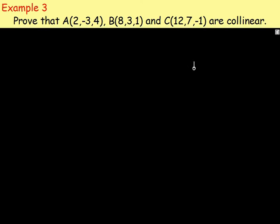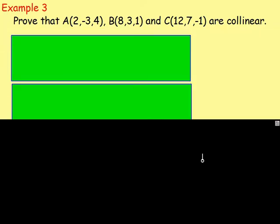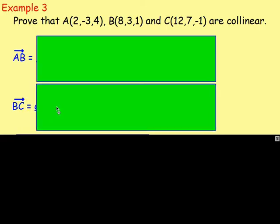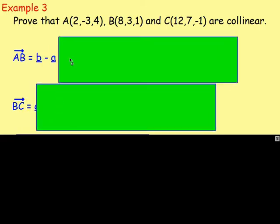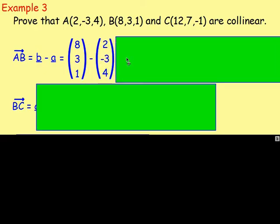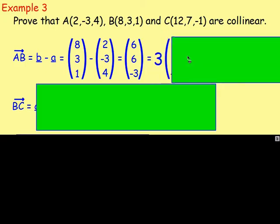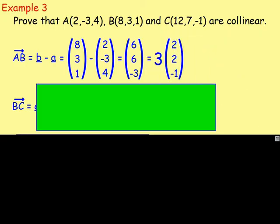Example 3: Prove that A, B and C are collinear. Again, you start the same way — consider vectors AB and BC. Vector AB is B minus A: (8, 3, 1) take away (2, -3, 4). If you work that out, you get (6, 6, -3). Take out a common factor of 3, so that's 3 times the vector (2, 2, -1).